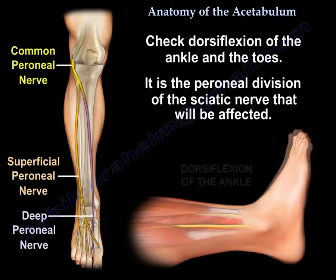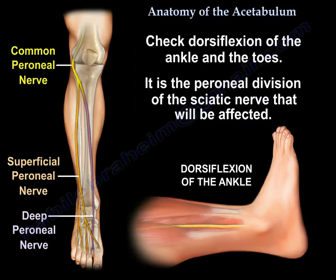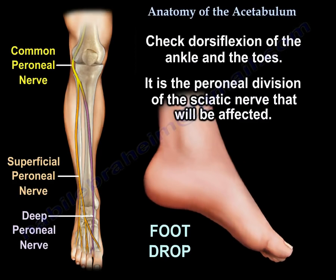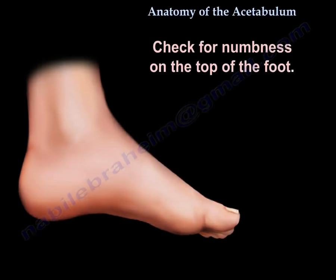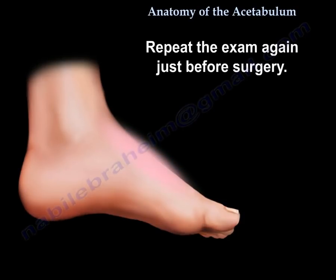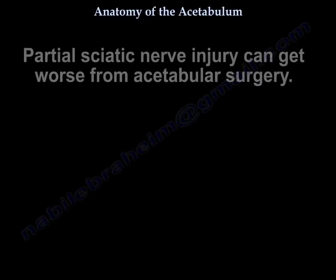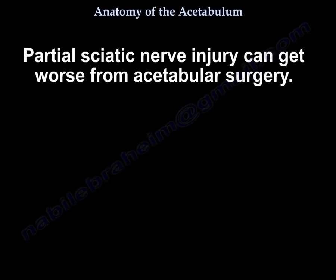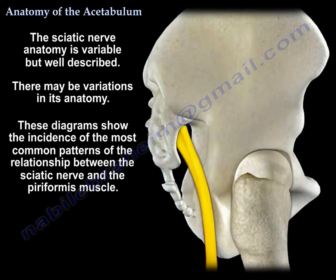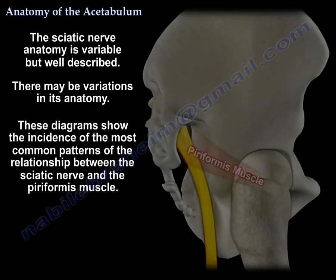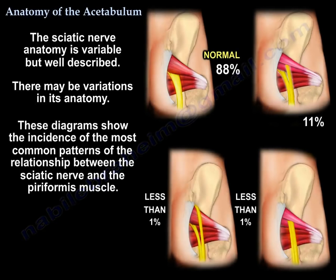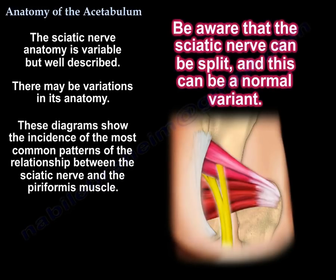Check the flexion of the ankle and the toes — it is the peroneal division that will be affected. Check for numbness at the top of the foot, and repeat the exam again just before surgery. Partial sciatic nerve injury can get worse from acetabular surgery. The sciatic nerve anatomy is variable but well described; this diagram shows the incidence of the most common pattern of the relationship between the sciatic nerve and the piriformis muscle. Be aware that the nerve can be split, and that can be normal.